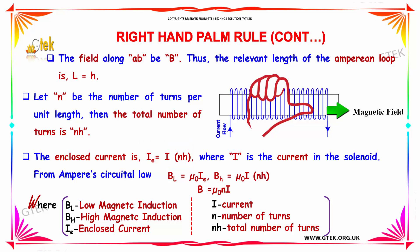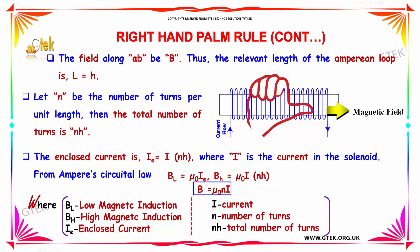So, based on Ampere's rule, BL is equal to μ₀ into I. So, BH equals μ₀ into I into NH. On the whole, the magnetic field is equal to μ₀ into N into I.